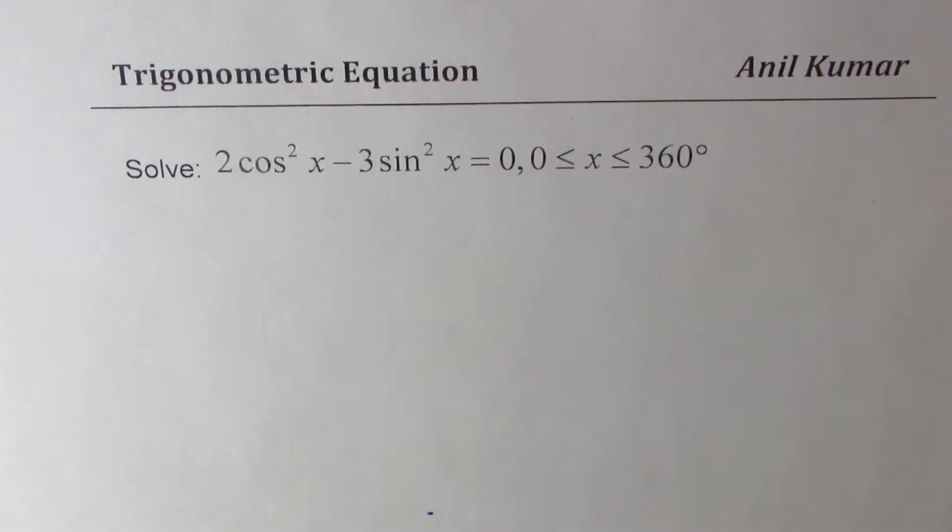Now here is a question from one of my subscribers who wants to know how to solve the trigonometric equation 2cos²x - 3sin²x = 0, where x is between 0 to 360 degrees.